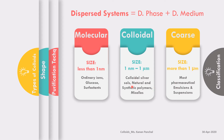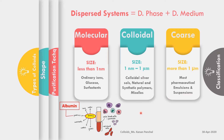Surfactants are molecular, but when they aggregate to form micelles they get into the colloidal size range. Most pharmaceutical emulsions and suspensions come under the coarse category, but if the globule size in an emulsion or the particulate size in a suspension is in nanometers, it can also be colloidal. Blood is a complex dispersion composed of RBCs, certain proteins, and plasma.